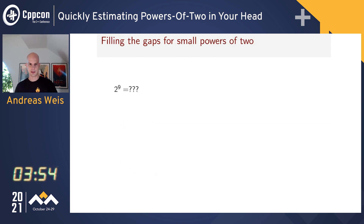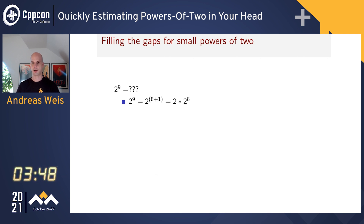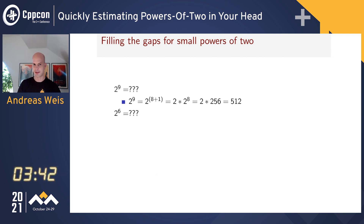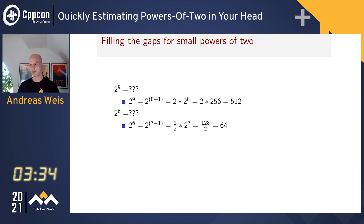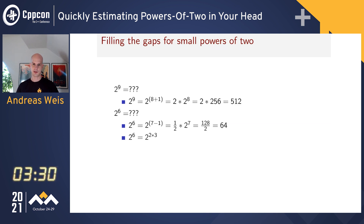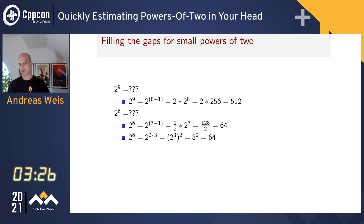Here's how I calculate the power of nine in my head. Nine is one more than eight, so it has to be two times 2^8 — two times 256, which is 512. Or for power six: six is one less than seven, so it has to be half of 2^7, which is half of 128, giving 64. Another way: six is two times three, so it has to be 2^3 squared — eight squared — which is again 64.